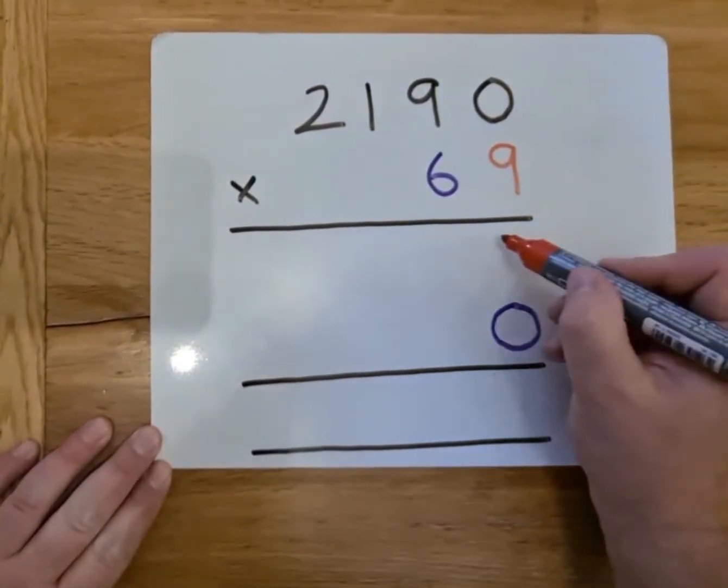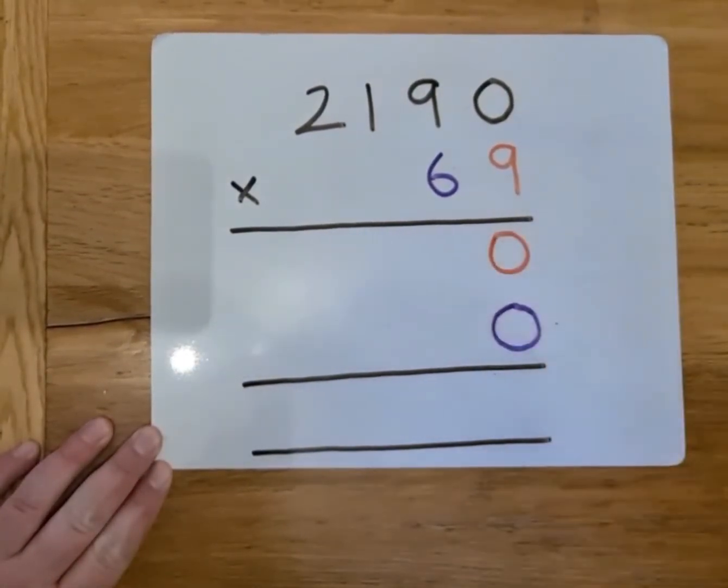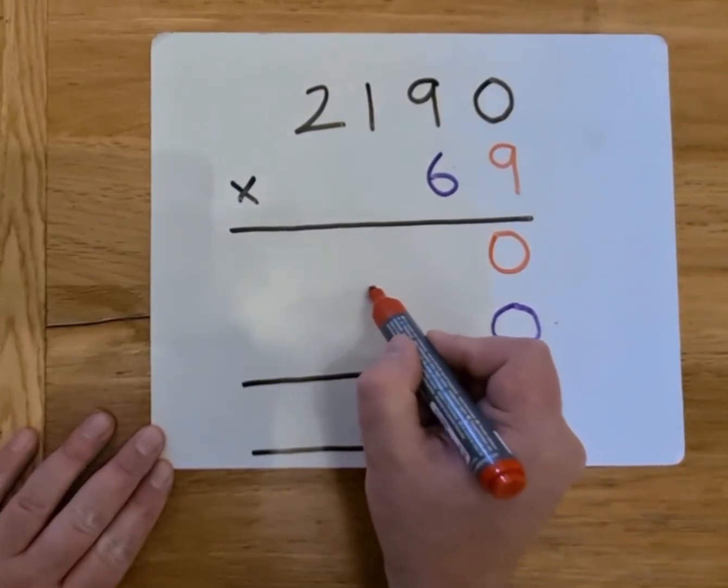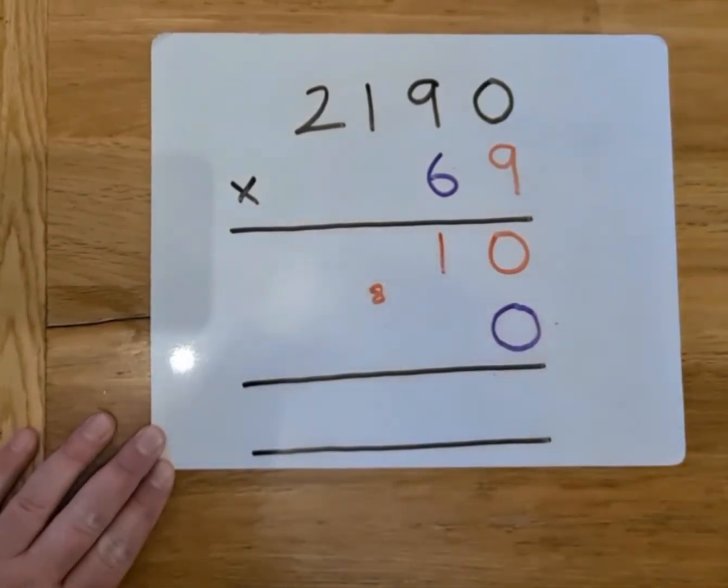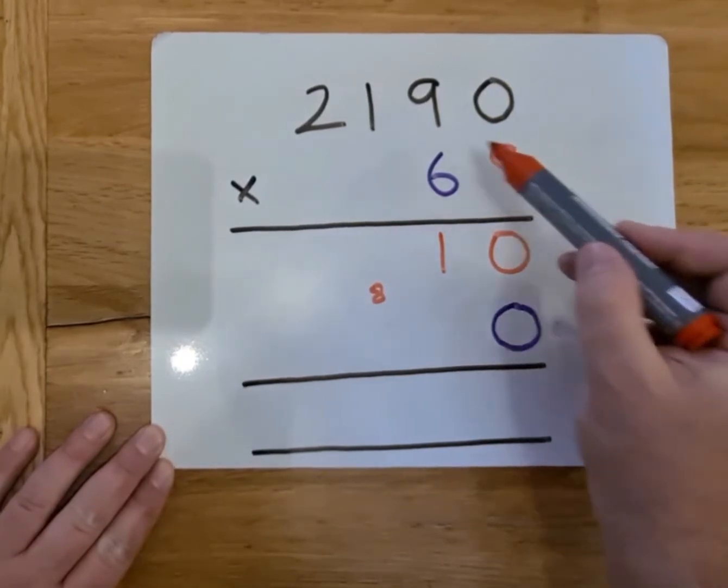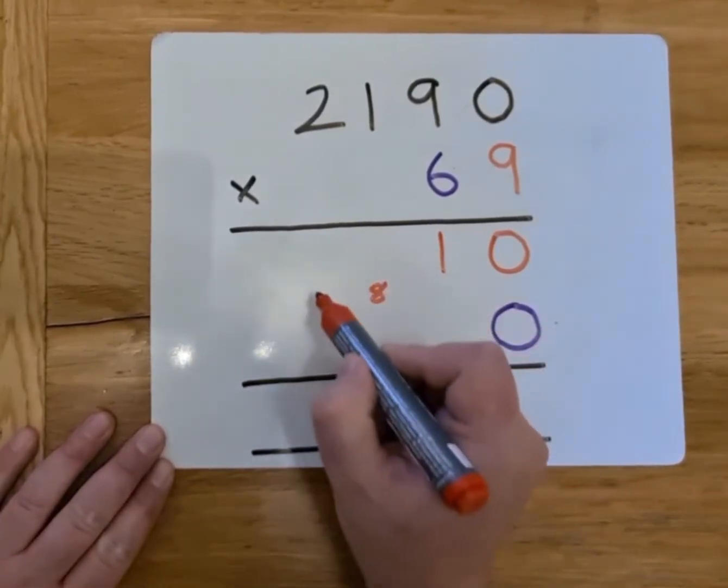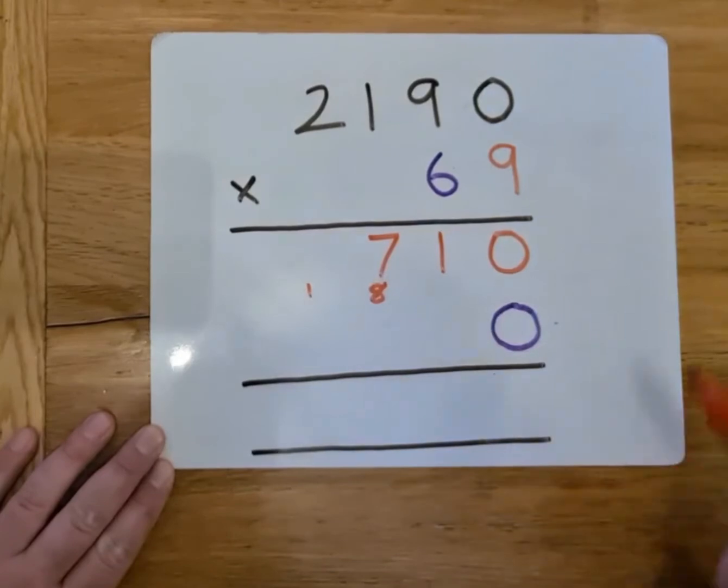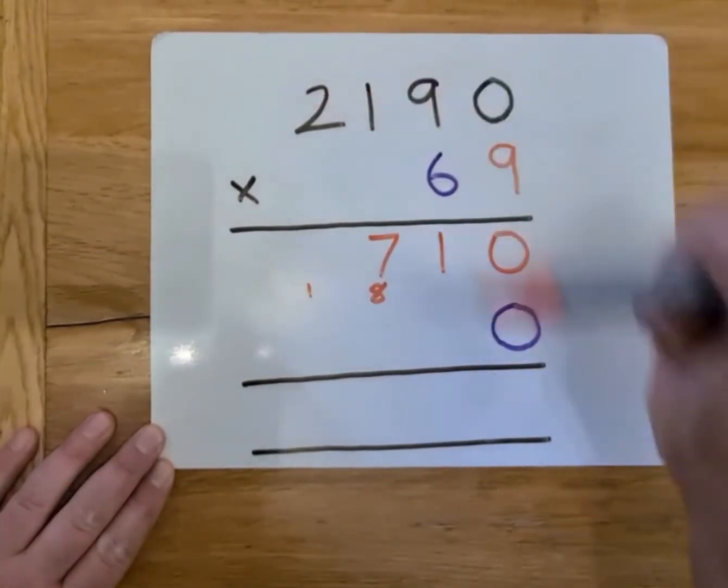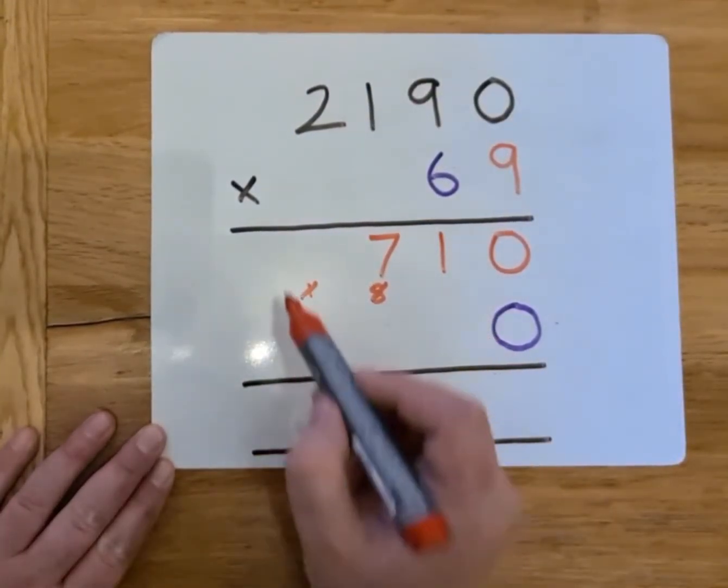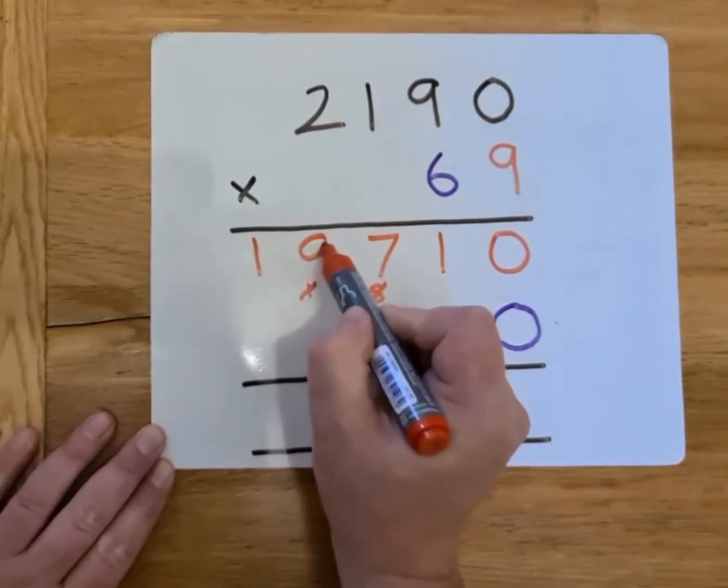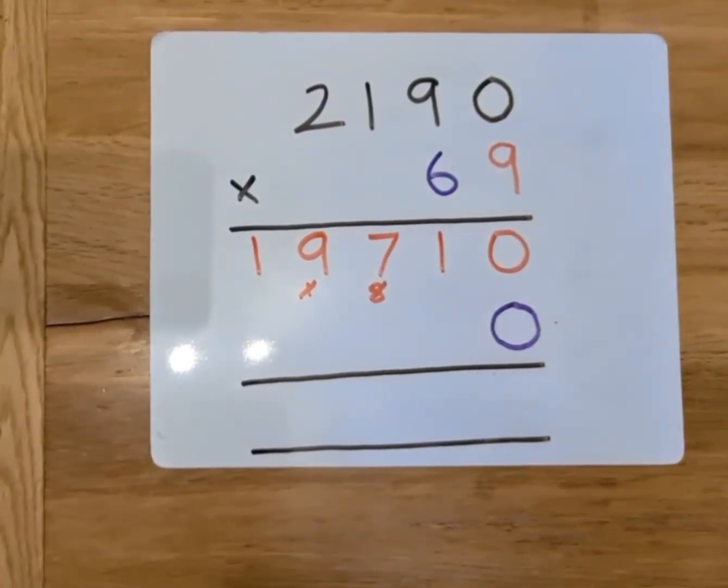So, let's start with the units. 9 times 0 is 0. Everything times 0 is 0. 9 times 9, 9 squared, is 81. So we'll put the 8 in this column and the 1 here. We'll now do 9 times 1, which is 9. Adding the extra 8 makes it 17. And then finally, 9 times 2. 9 times 2 is 18. Add the extra 1 is 19. 19,710.